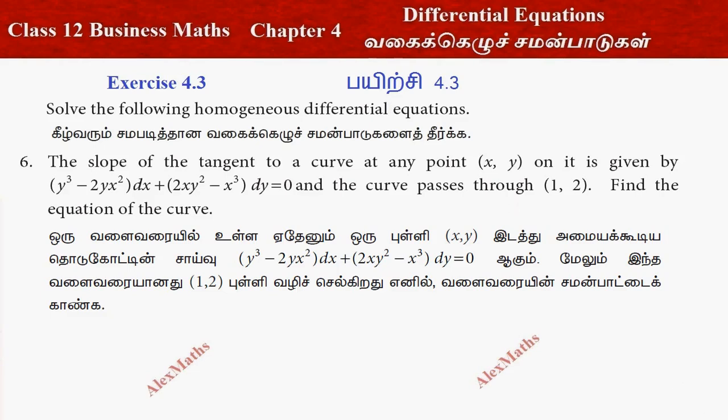Hi students, this is Alex here. X is 4.3, question number 6. The slope of the tangent to the curve at any point on it is given by: